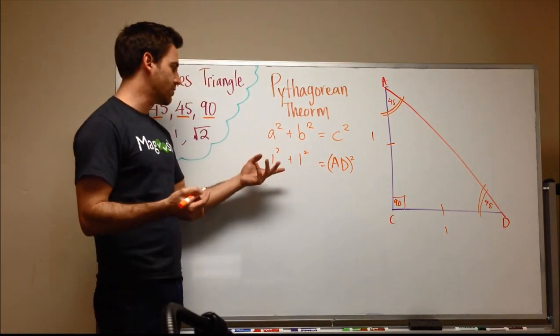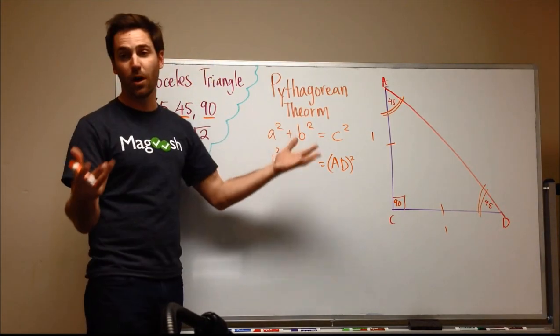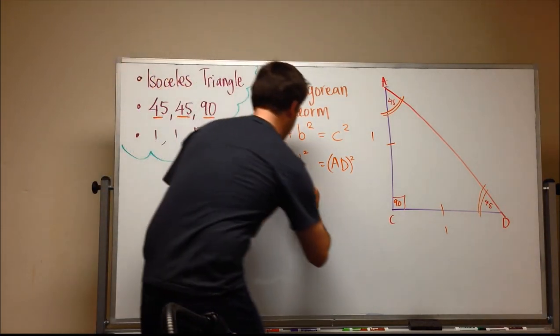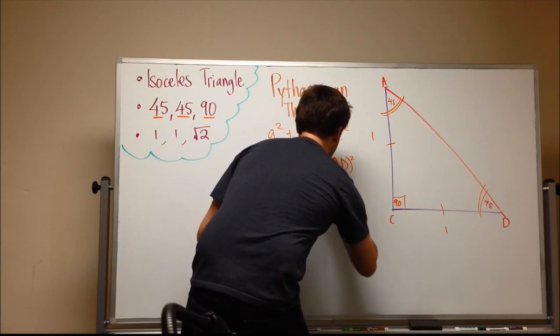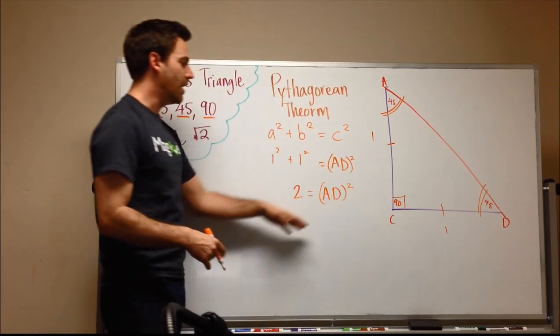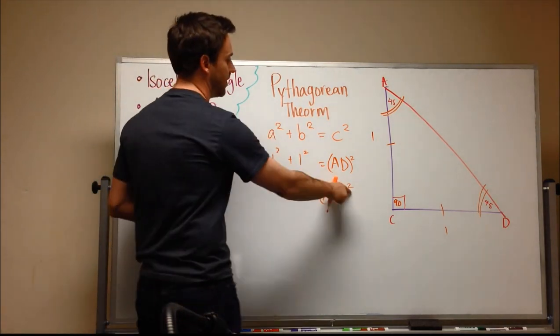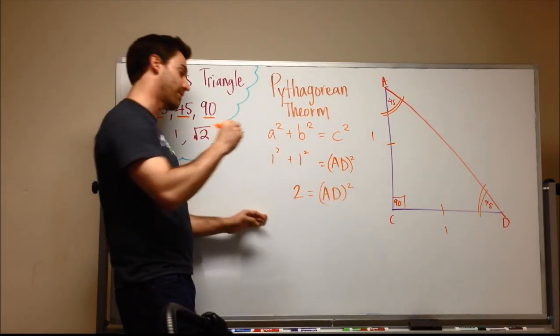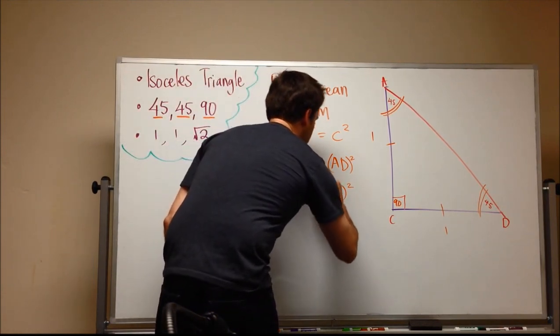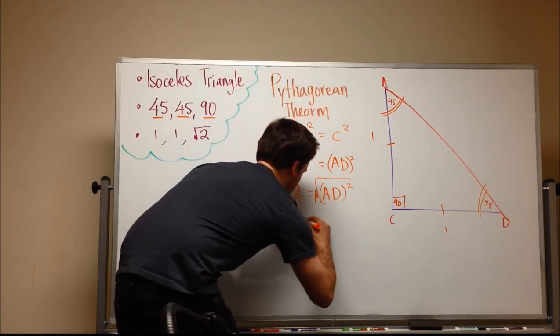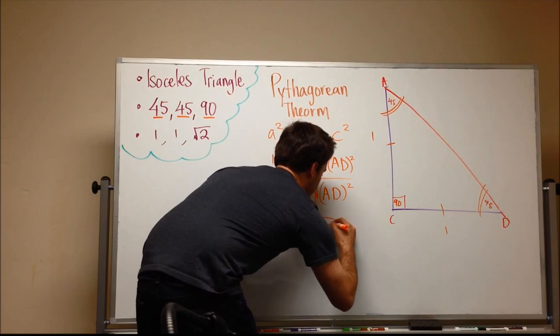So now one squared is one and one squared is one and one plus one is two. I know this is tough math. Stick with me. And so we have two equals AD squared. And then to get rid of the square, we need to take the square root. So then we end up with AD equals square root two.